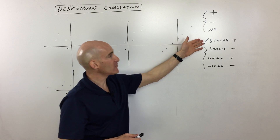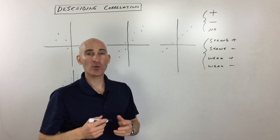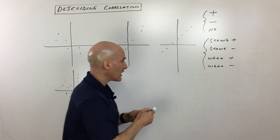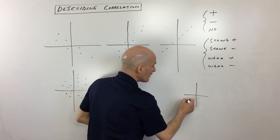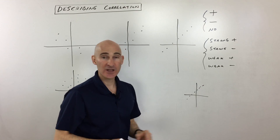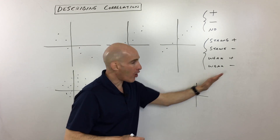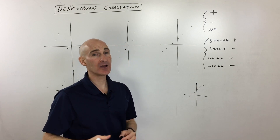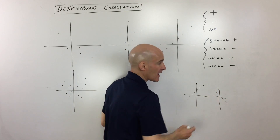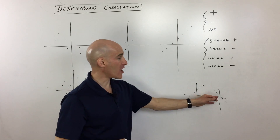If we want to refine it further, we could say that's a strong positive correlation. What that means is the points are very well aligned, like in a straight line, so that if you were to draw that line of best fit, it would come very close to hitting all of those points. If the points were in almost a straight line and trending down with a negative slope, that would be a strong negative.